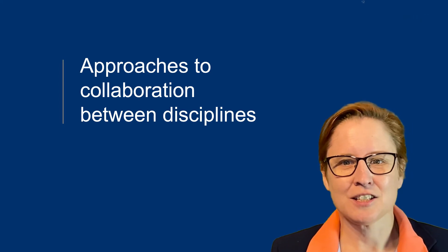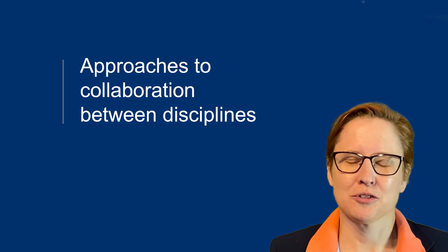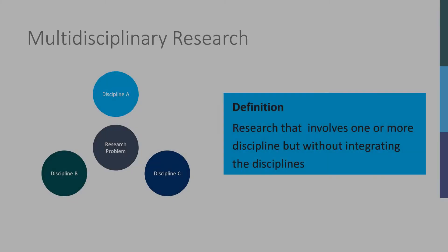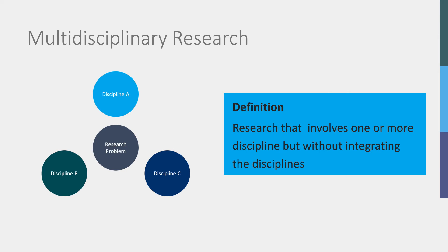In this next section, I will discuss the different approaches to these collaborations. The first form I will discuss is multidisciplinary research. This type of research involves different disciplines working on the same research problem, but they do not integrate disciplines. Each discipline comes up with their own answers or solutions to the research problem posed.